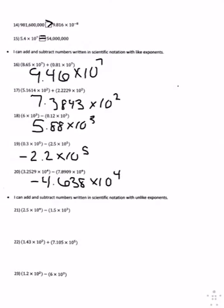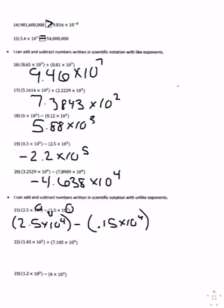Number twenty-one, you need to make the exponents the same. I keep the one with the larger exponent, 4, and I am going to change this 3 into a 4 by moving the decimal up one place. My problem is 2.5 times 10 to the 4th minus 0.15 times 10 to the 4th. The exponents are the same, so I can subtract 2.5 minus 0.15, and you end up with 2.35 times 10 to the 4th power.